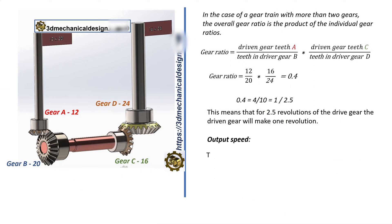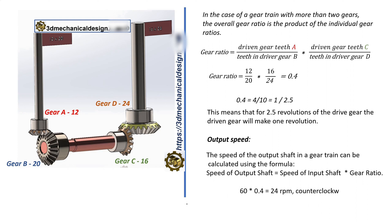Output speed: The speed of the output shaft in a gear train can be calculated using the formula: Speed of output shaft equals speed of input shaft times gear ratio. 60 times 0.4 equals 24 RPM counterclockwise.